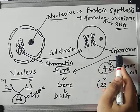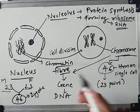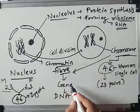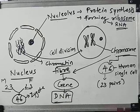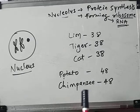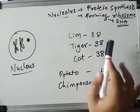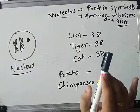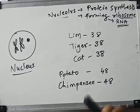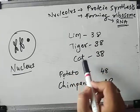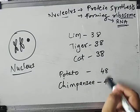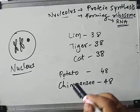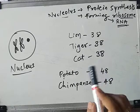Chromosome is actually the condensed form of chromatin fiber. So chromosomes and chromatin fibers are made up of genes, and those genes contain DNA — our genetic material that encodes hereditary information. Keep in mind: it is not the number of genes or chromosomes but the types of genes that decide the specific character in the species. For example, lion, tiger, and cat all have 38 chromosomes, and potato and chimpanzee both have 48 chromosomes — but the types of genes in each are different, which decides their specific features.